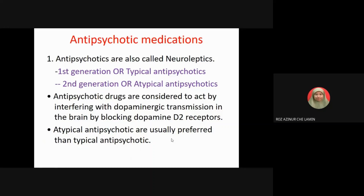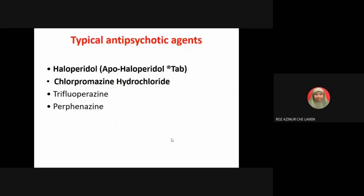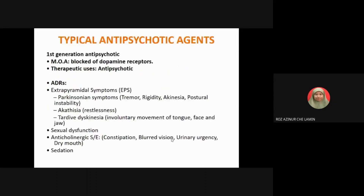Examples of typical antipsychotic agents include: first, haloperidol; second, chlorpromazine hydrochloride; third, fluphenazine; and fluphenazine. The mechanism of action for first-generation antipsychotics is to block the dopamine receptor, and the therapeutic use is as an antipsychotic.